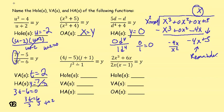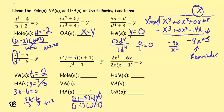For the next function, we factor the denominator as a difference of squares: (j - 1)(j + 1). The j + 1's cancel, giving a hole at j = -1. Setting the remaining factor equal to zero gives a vertical asymptote at j = 1. The leading terms are 4j and 1j, so 4 divided by 1 gives a horizontal asymptote at y = 4.